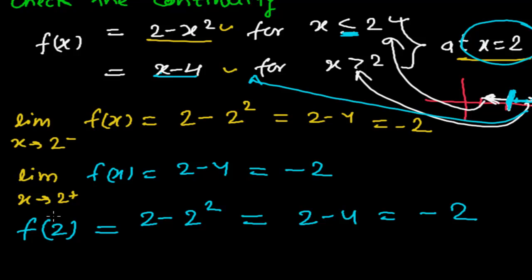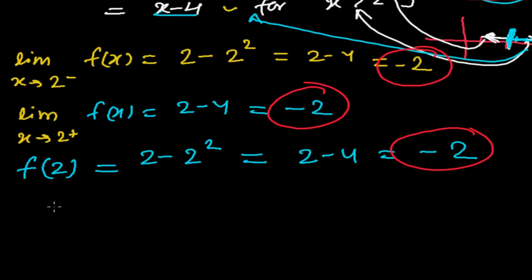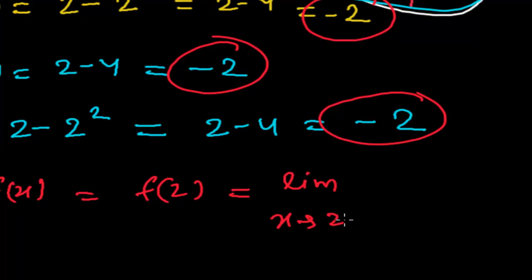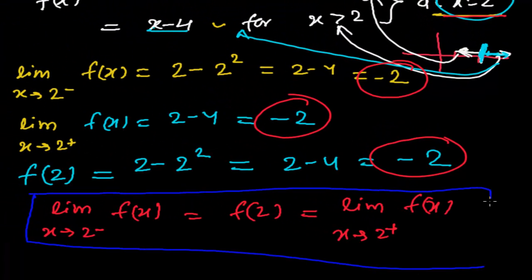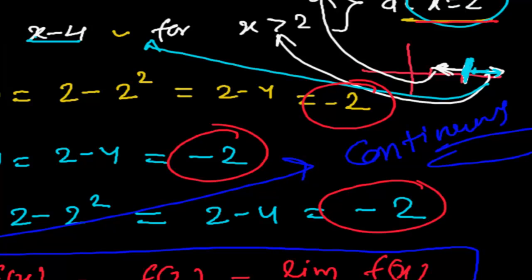So what we got: the left-hand limit is minus 2, the right-hand limit is minus 2, and the value of the function at x equals 2 is also minus 2. Since left-hand limit equals right-hand limit equals the value of the function, all three are equal, so this function is continuous.